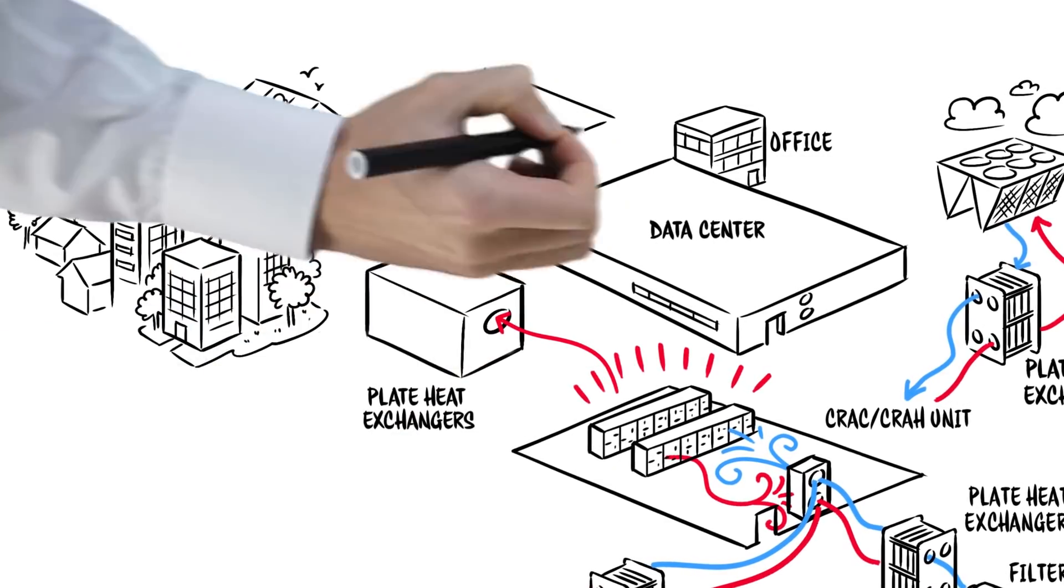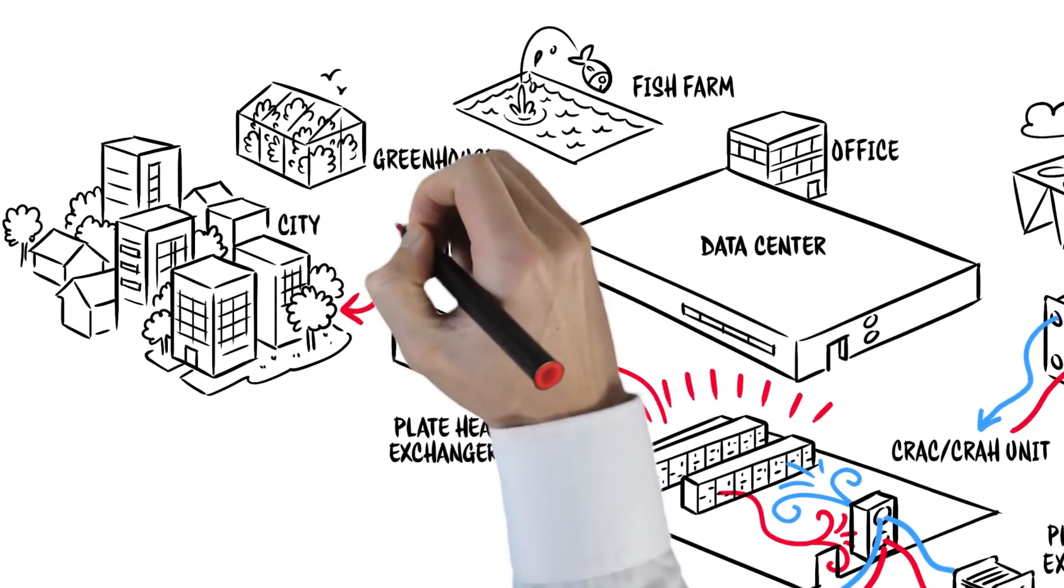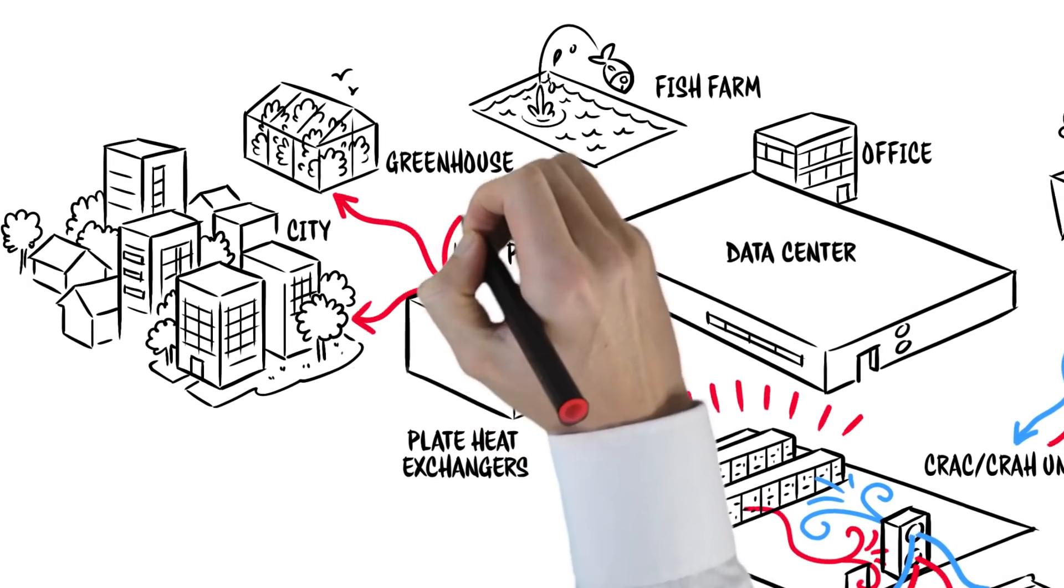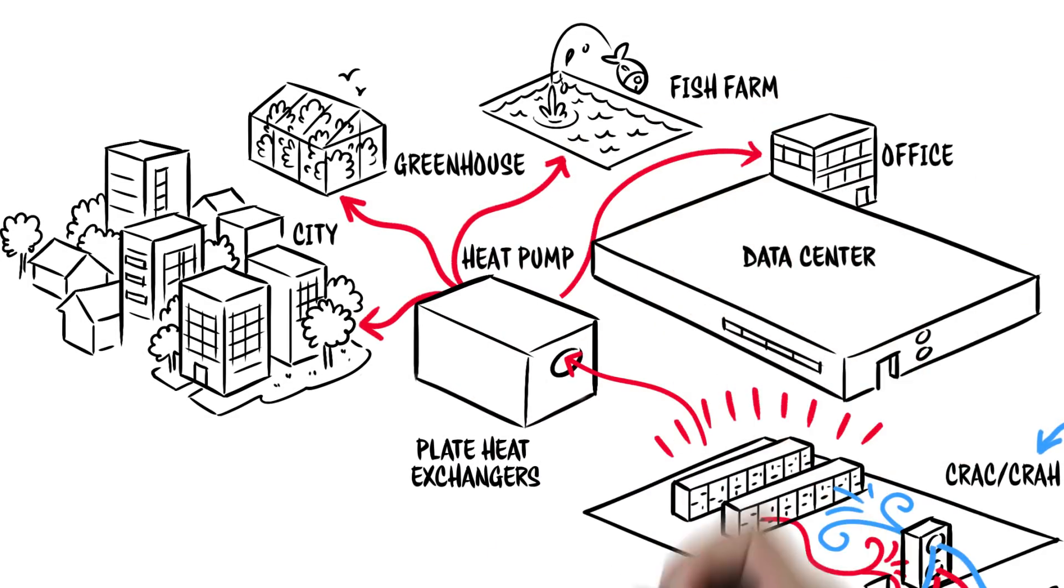Low temperature waste heat, when run through a heat pump, will be warm enough to heat anything from the city around you to things on a smaller scale, like a greenhouse, a fish farm, or your very own offices.